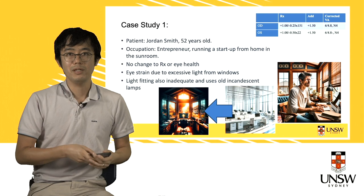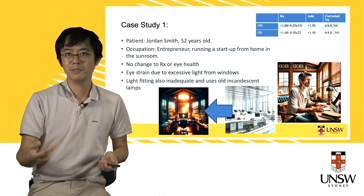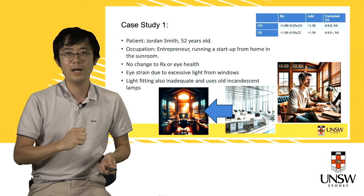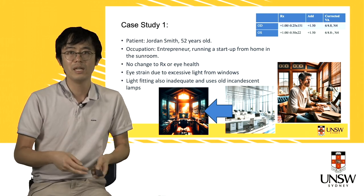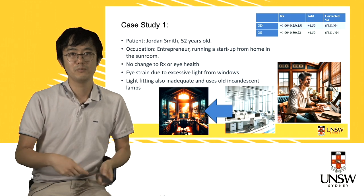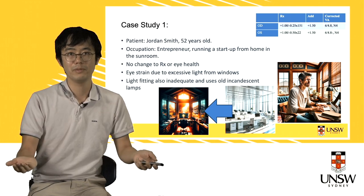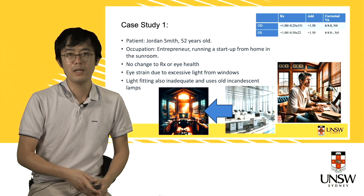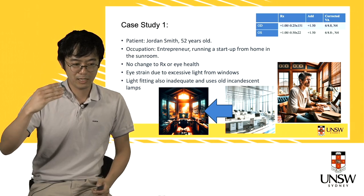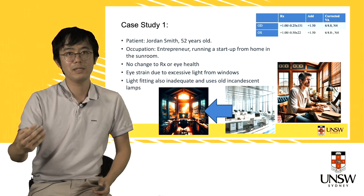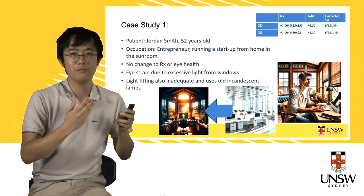Jordan started getting eye strain. An optometrist did a whole heap of tests — the prescription is fine, the glasses are fine, he doesn't need any other type of lenses, and he doesn't have any eye disease. So what next? How could we still help him? Why is he still getting eye strain? Well, it turns out through a careful interview and careful history taking that it is most likely due to his environment.